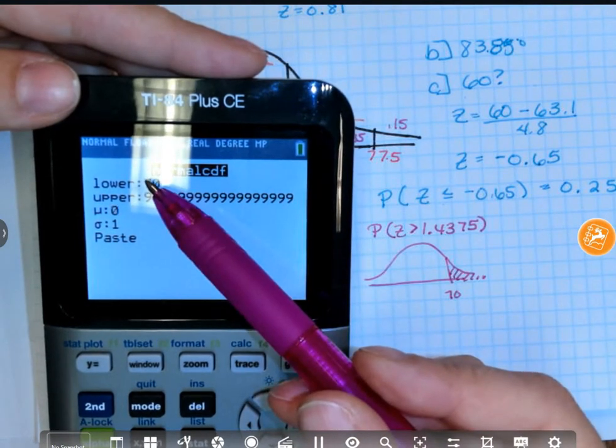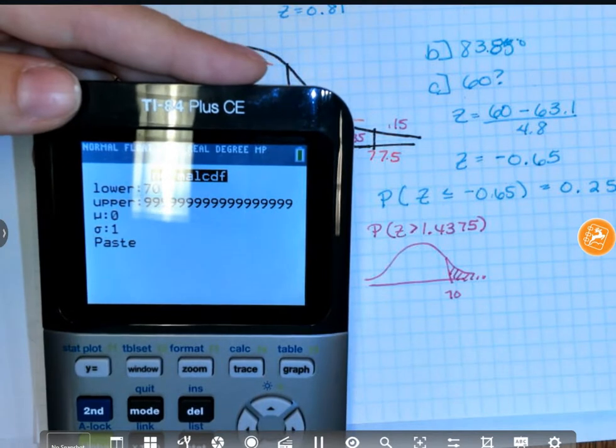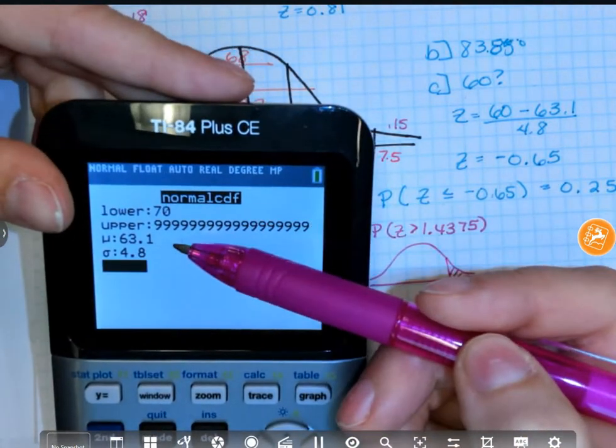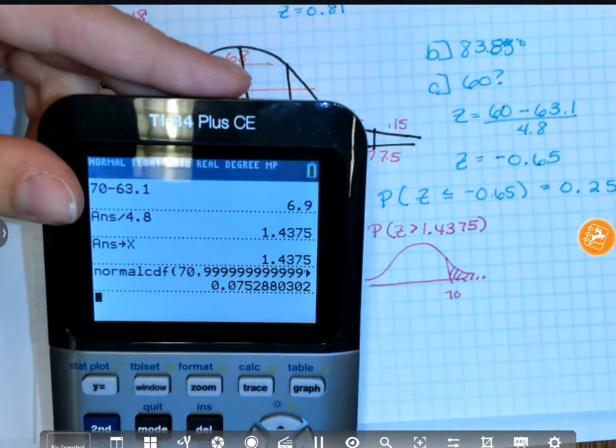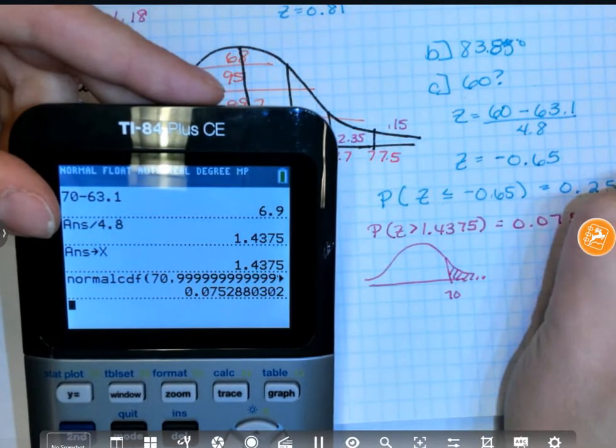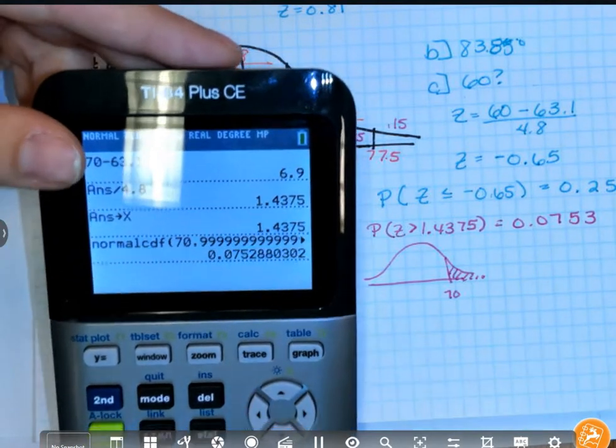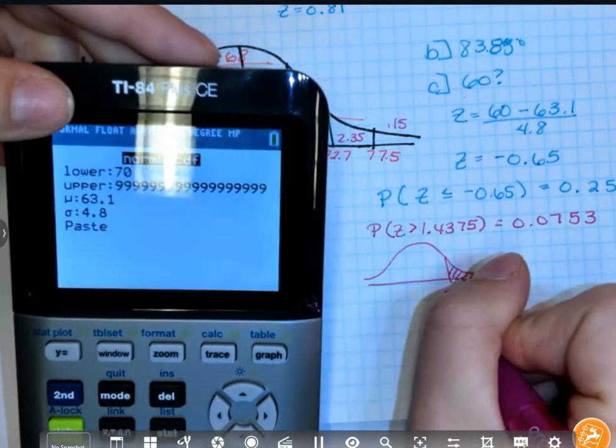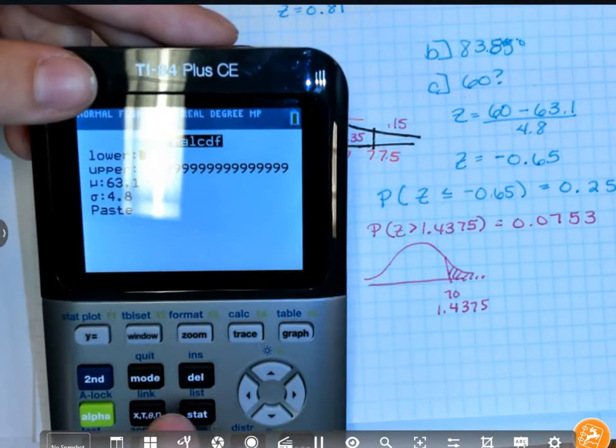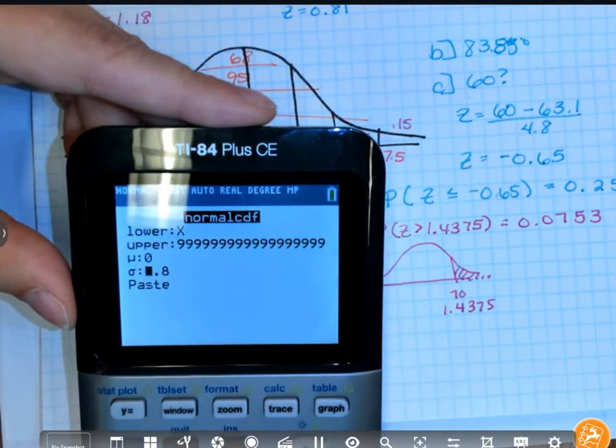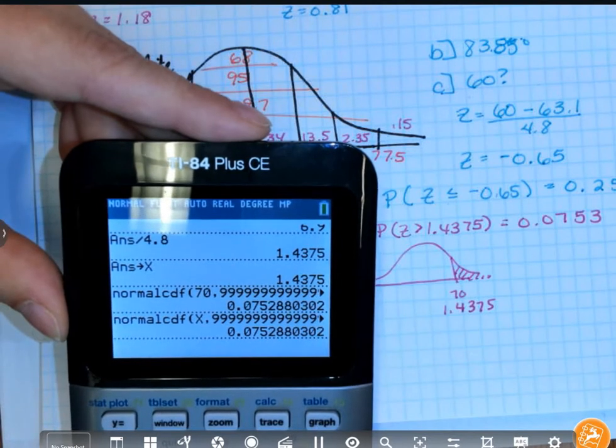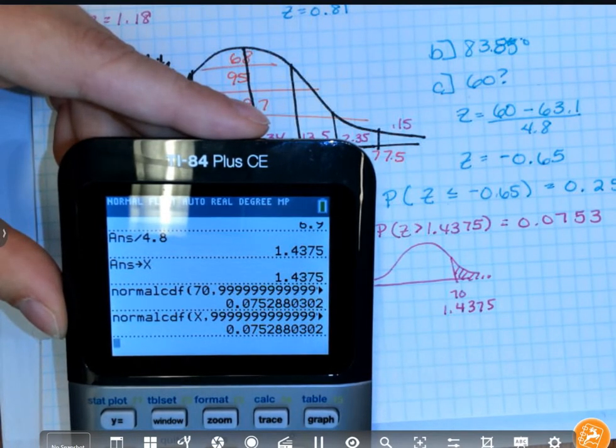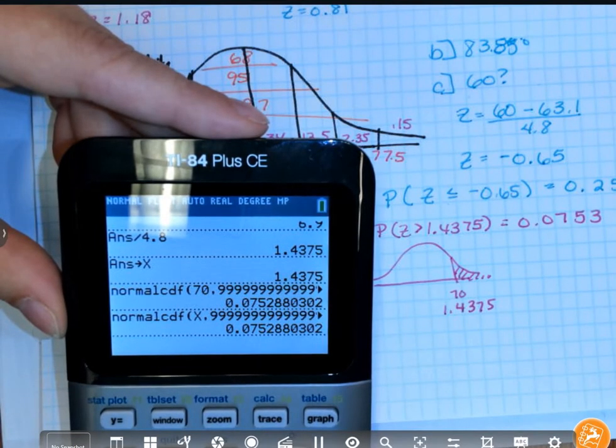And since I used 70 as my lower value, I'm going to use my mean, which was, again, 63.1, and my standard deviation of 4.8. If I use a data value, I use the data mean, the data standard deviation, and I calculate. And I come up with 0.0753. If I want to do Z score, normal CDF, if this time my Z score here was 1.4375, I'm going to go from my X to crazy nines, and Z score is always 0 and 1 for mean and standard deviation, and you get the exact same answer.